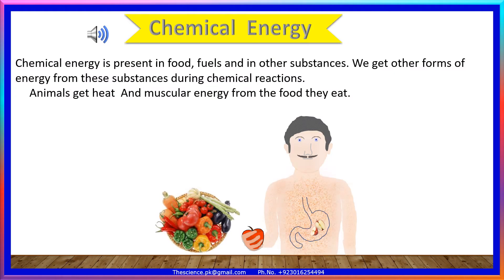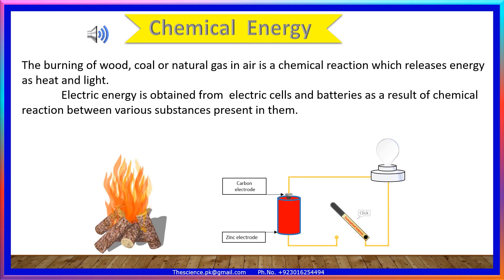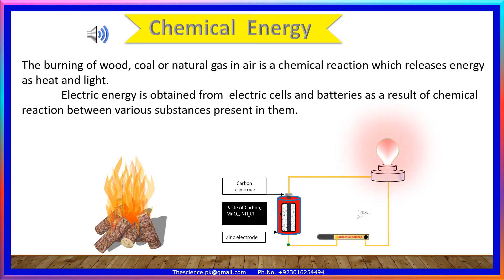Chemical energy is present in food, fuels, and other substances. We get other forms of energy from these substances during chemical reactions. Animals get heat and muscular energy from the food they eat. The burning of wood, coal, or natural gas in air is a chemical reaction that releases energy as heat and light. Electric energy is also obtained from electric cells and batteries as a result of chemical reactions between various substances present in them.